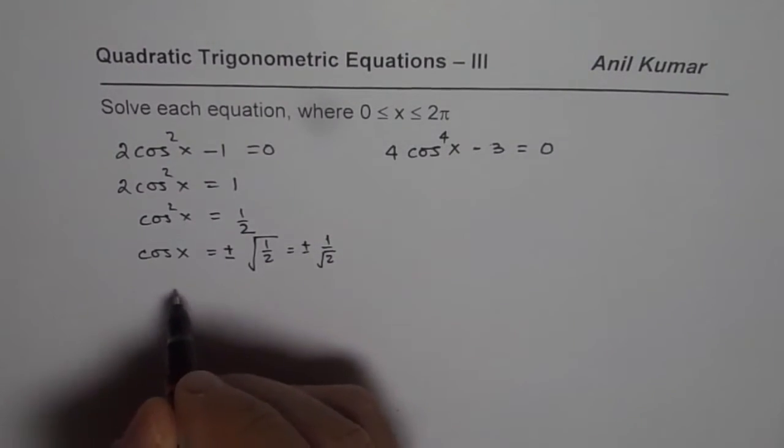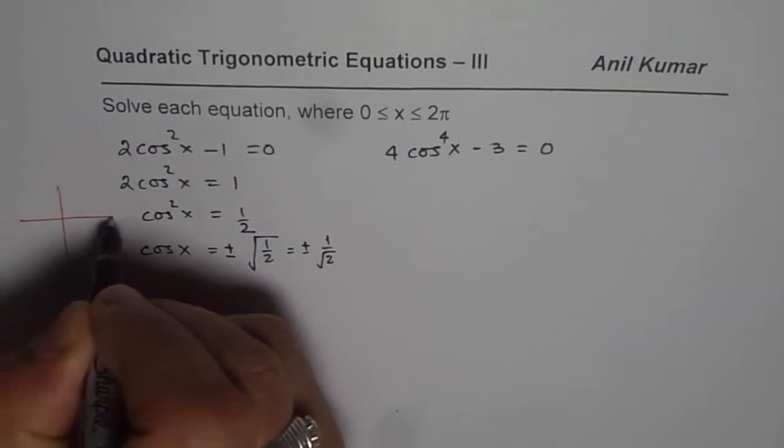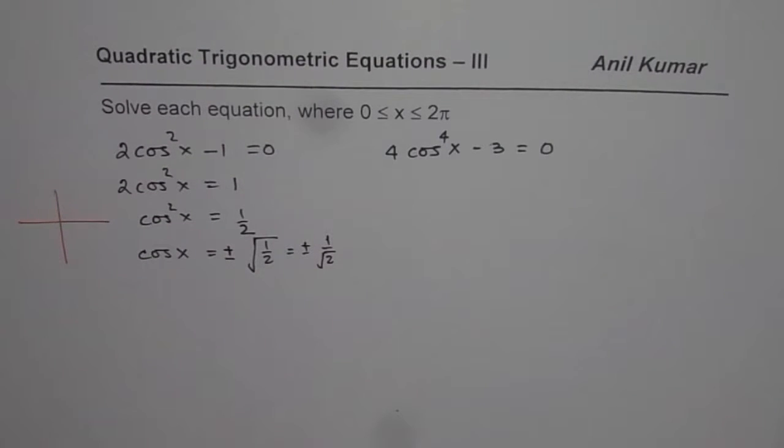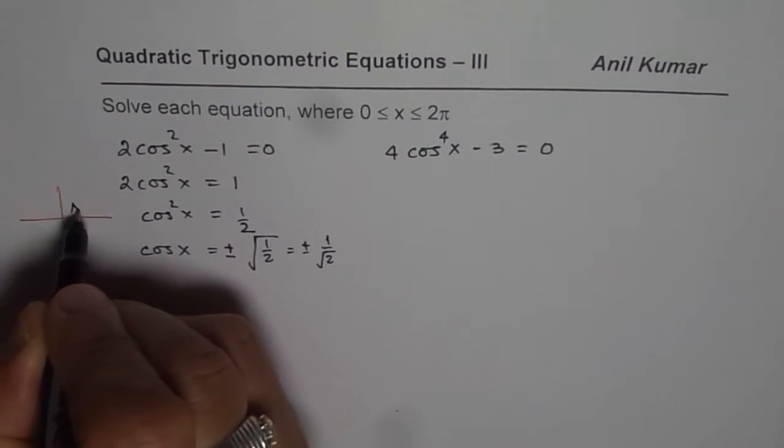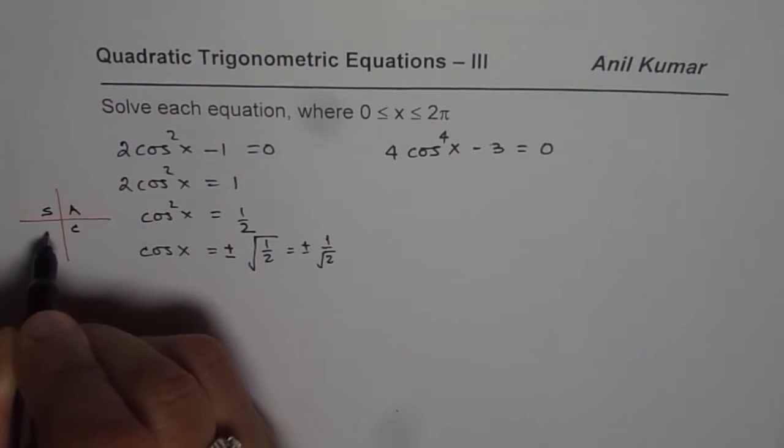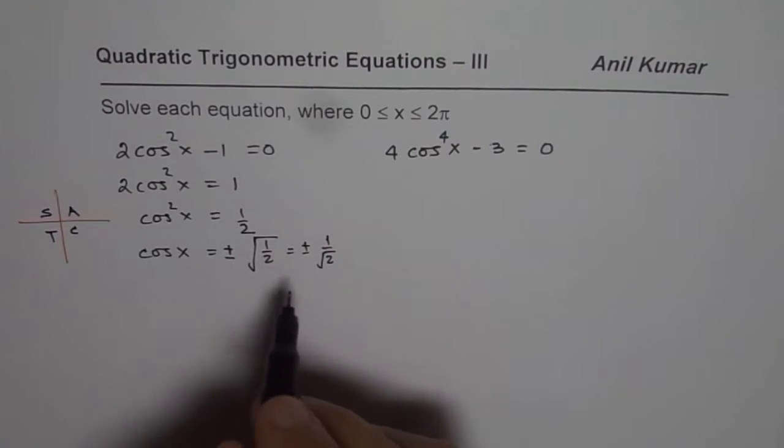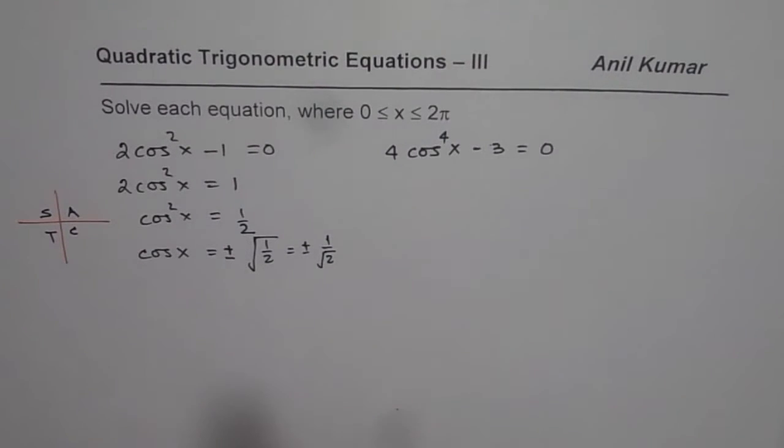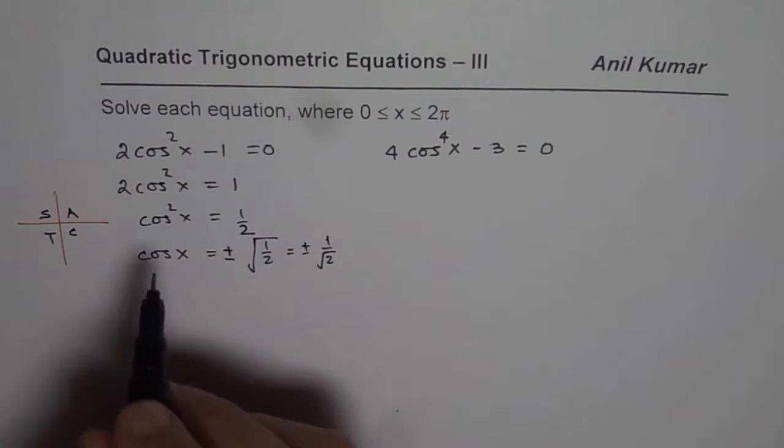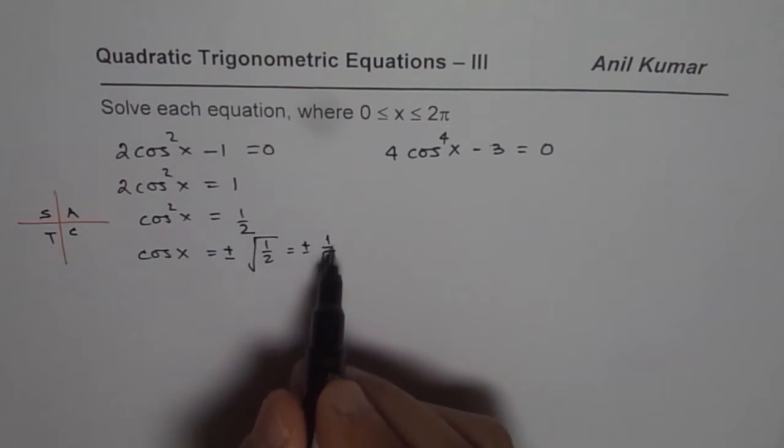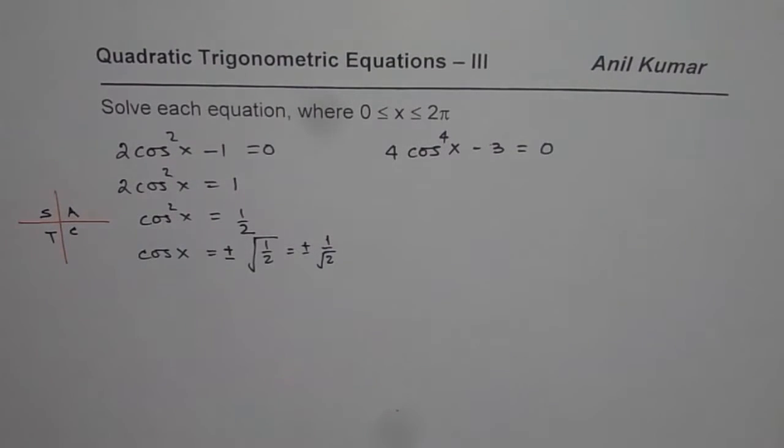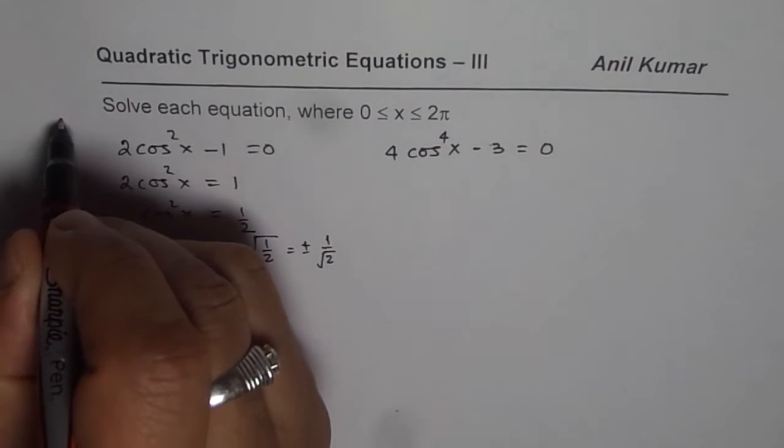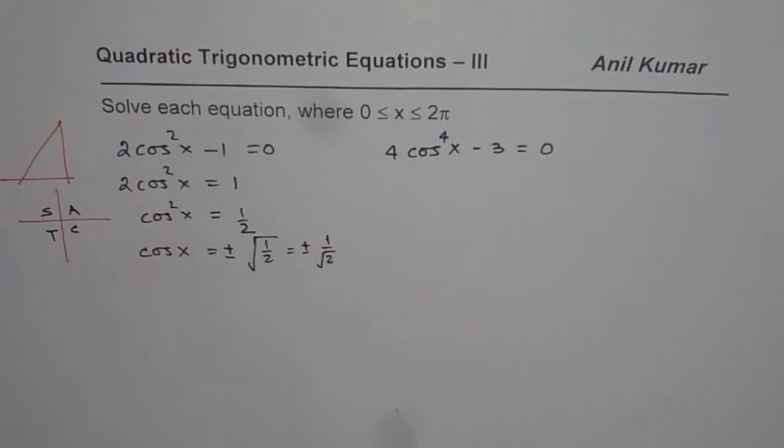Now cos is positive in quadrant 4 and in quadrant 1. It is negative in 2 and 3. Since we are looking for both values, so we are expecting 4 answers for this particular question. Let us find the acute angle for which cosx is 1/√2. You can always use your special triangle, which is π/4.